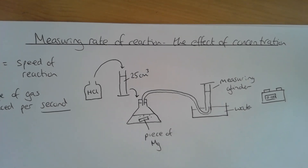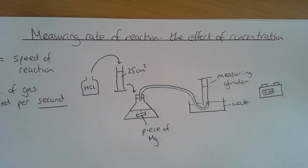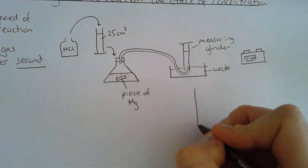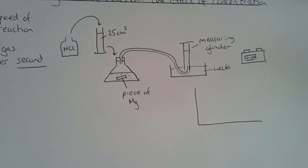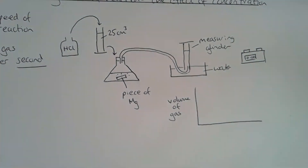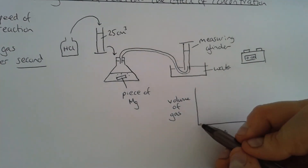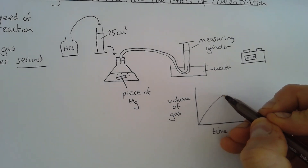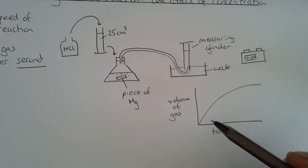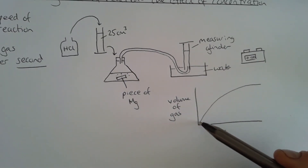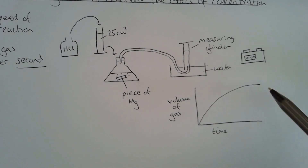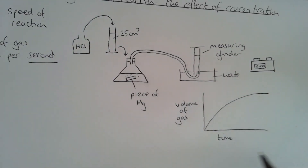So let's think about the type of graph that will be produced as a result of this experiment. We're going to do a sketch graph here, looking at the volume of gas produced over time. What we would see is a graph that looks like this — at the beginning of the reaction, the reaction is very fast because the gradient is steep, and then over the course of the reaction, that reaction slows down.